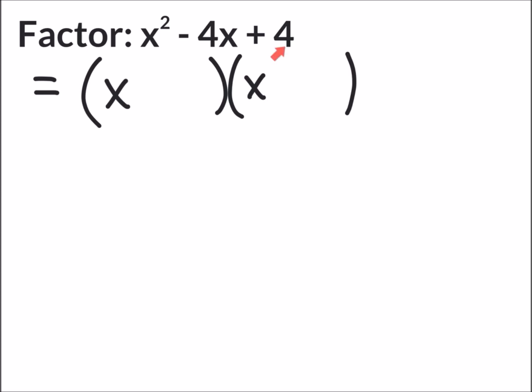For the second term in each binomial we're going to say what is the square root of 4. That will be 2 and 2. And now we have to choose our sign so that we multiply to get a positive 4 and add to get a negative 4. That means each sign has to be negative.